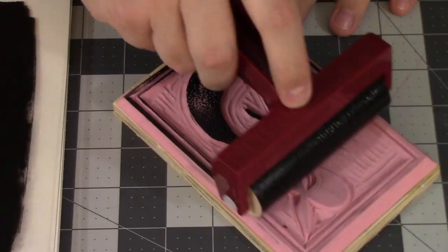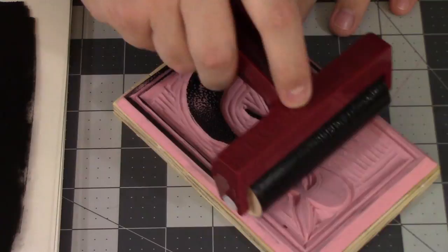The ink is then applied to the block and pressed onto a sheet of paper to get the finished design.